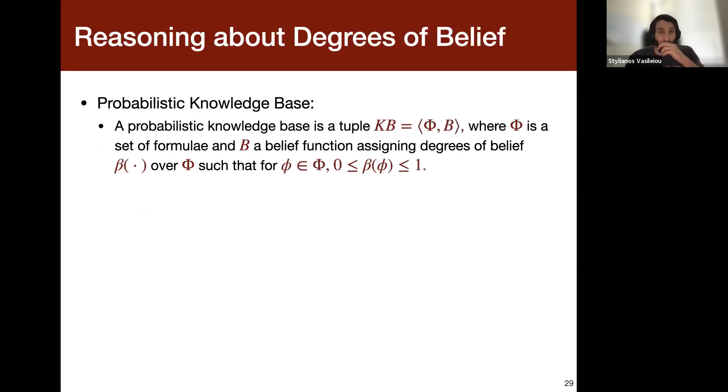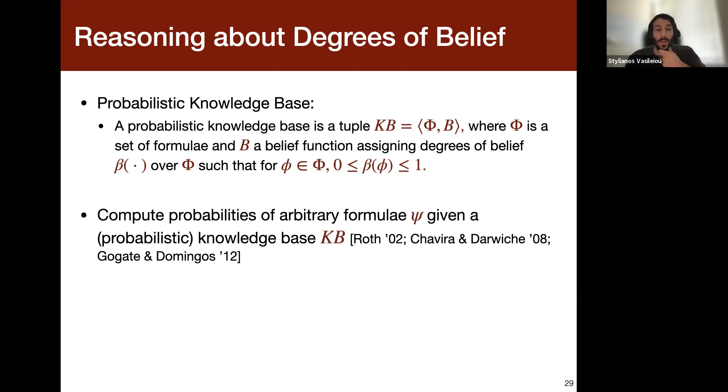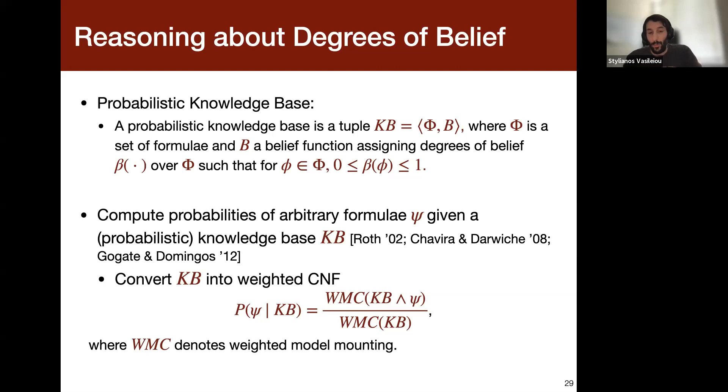So now, once we have these degrees of belief, we need to represent them and then reason with them. So to represent them, we can use a probabilistic knowledge base, which consists of a set of formulas and a belief function that assigns the degrees of belief to each formula in phi, such that they're between zero and one. And one thing to note here is that we have to make sure that the probabilities, basically beliefs, are consistent. So now, given this, we can now compute probabilities of arbitrary formulas, given the probabilistic knowledge base. And basically how to do this—and there has been many works that showed how to do that—is to convert the knowledge base into a weighted CNF representation, and then basically use weighted model counting to compute this probability.